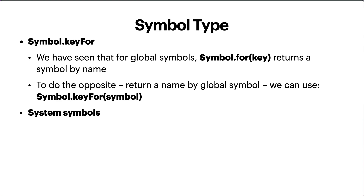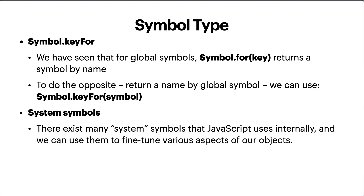System symbols: there exist many system symbols that JavaScript uses internally, and we can use them to fine-tune various aspects of our objects. There is a list of internal system symbols such as Symbol.hasInstance, Symbol.toPrimitive, Symbol.iterator, and Symbol.isConcatSpreadable. For instance, Symbol.toPrimitive allows us to describe object-to-primitive conversion. Other symbols will become familiar when we study the corresponding language features.